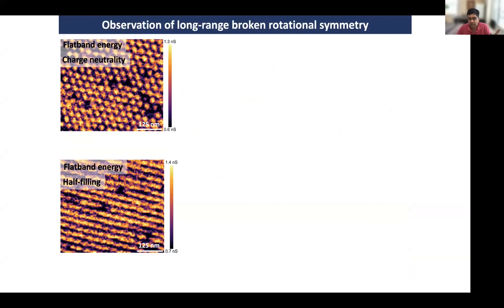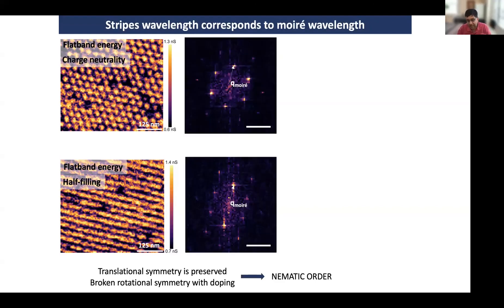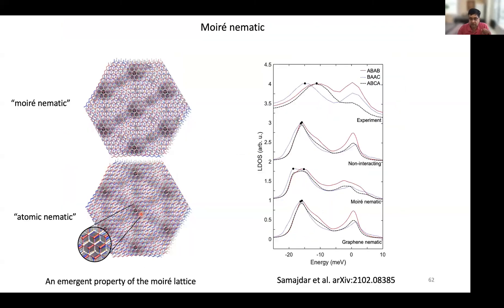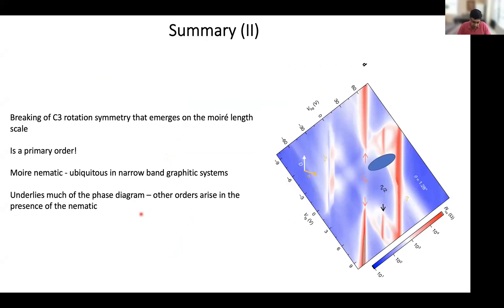Over a much larger region of the sample, you can clearly see the difference: a nice triangular lattice at charge neutrality, and stripe-like behavior away from charge neutrality. In Fourier space, you can show that this is a nematic phase — a phase where one direction of the lattice is preferred by the electrons over the other two. Our theoretical colleagues found that this breaking of symmetry happens at the Moiré lattice scale, not the atomic scale, suggesting this phenomenon may be fairly ubiquitous in other Moiré systems as well.